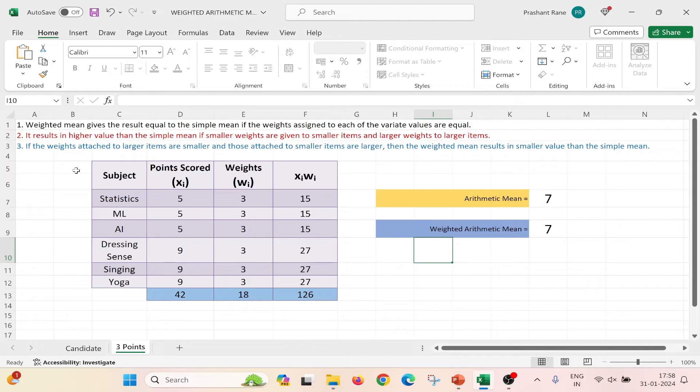Now let us go to the second aspect. The second aspect states that it results in higher value than the Simple Mean. That means the Weighted Arithmetic Mean will be higher than the Arithmetic Mean if smaller weights are given to smaller items and larger weights to larger items. So we can see these are the smaller items and these are the larger items. So we will give smaller weights to the smaller items and larger weights to the larger items. We can see that the Weighted Arithmetic Mean which we get is 8.43 which is greater than the Arithmetic Mean. So we have proved the second aspect.